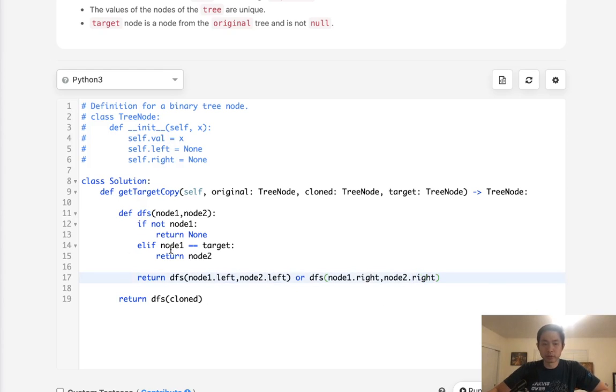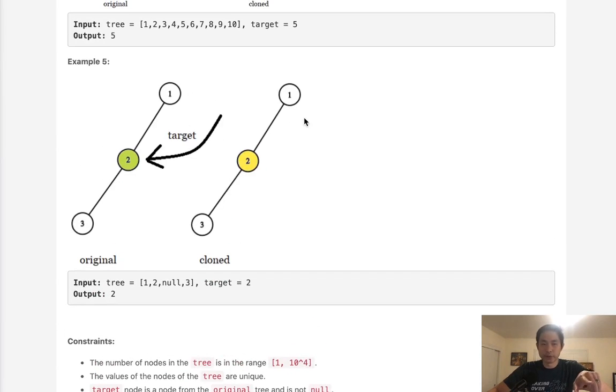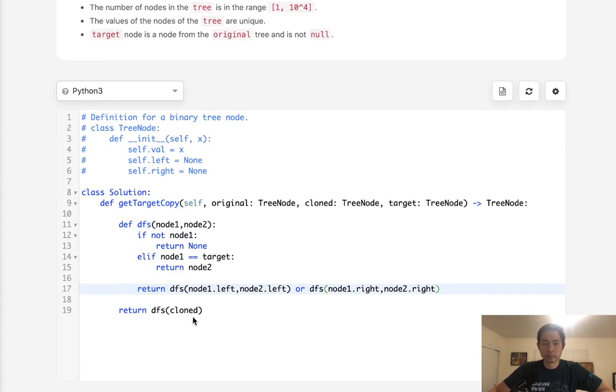So what's going on here? We're really doing the same thing. The only thing that's different is now we're traversing through both of the trees. And as soon as this target here is equal to the original one, we're going to be at the same position inside of the clone tree, so we return that node.